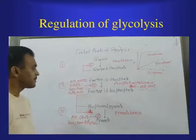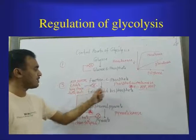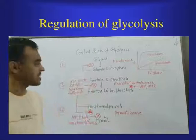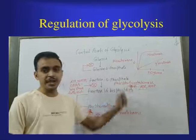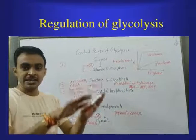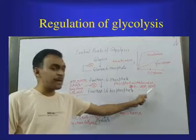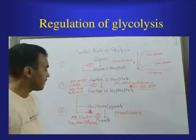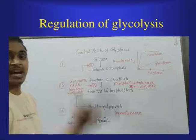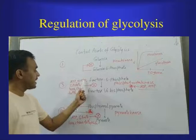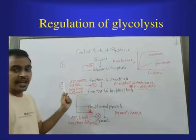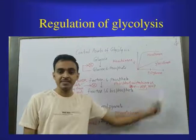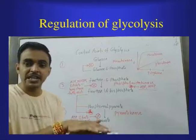The third step is the phosphorylation of fructose 6-phosphate into fructose 1,6-bisphosphate, catalyzed by the enzyme phosphofructokinase. When the energy level is very low, the concentration of AMP will be very high in the cell and this will activate the enzyme. But when the energy level of the cell is very high, ATP, NADH, citrate, and long-chain fatty acids inhibit phosphofructokinase.